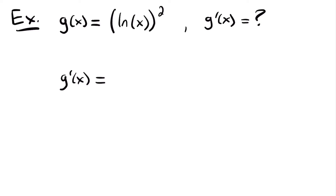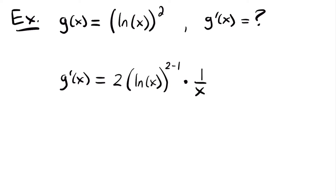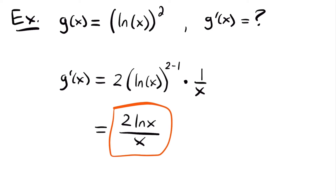We have to use the chain rule here, because this is a composite function where the outside function is the quantity squared and the inside function is ln(x). The derivative of the outside function gives 2·ln(x) to the power of 1, and we multiply by the derivative of the inside function, which is 1/x. Simplified, g prime of x equals 2·ln(x) divided by x.